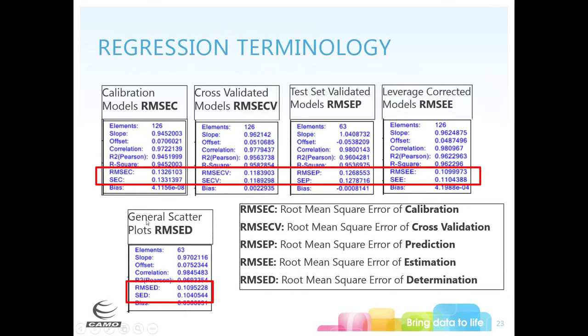The regression terminology slide covers abbreviations that have slightly different meanings depending on which stage of model building you're in — calibration or prediction.